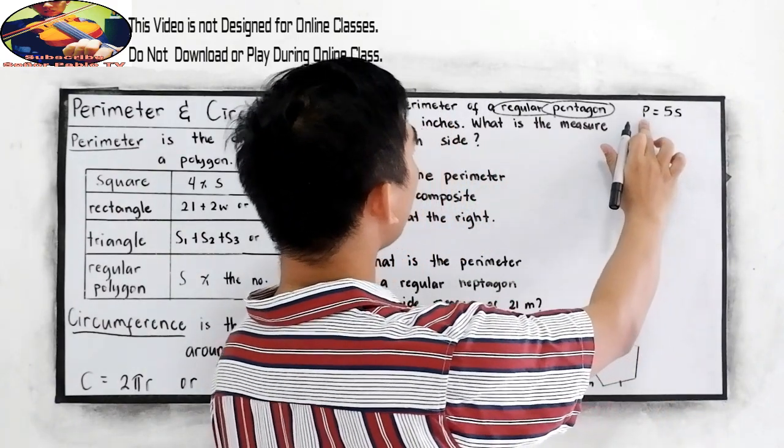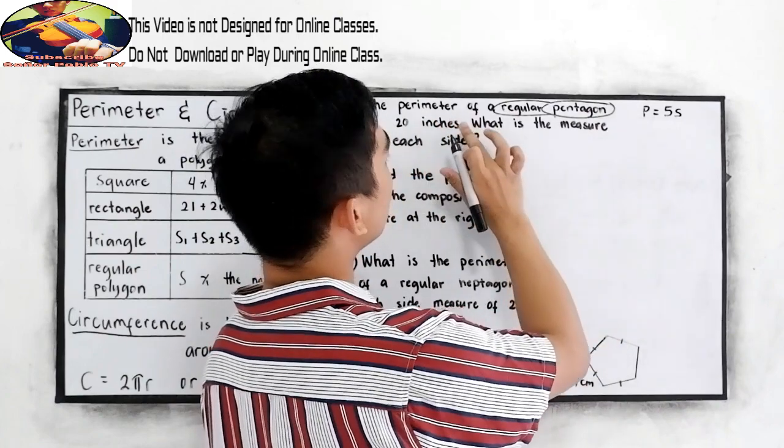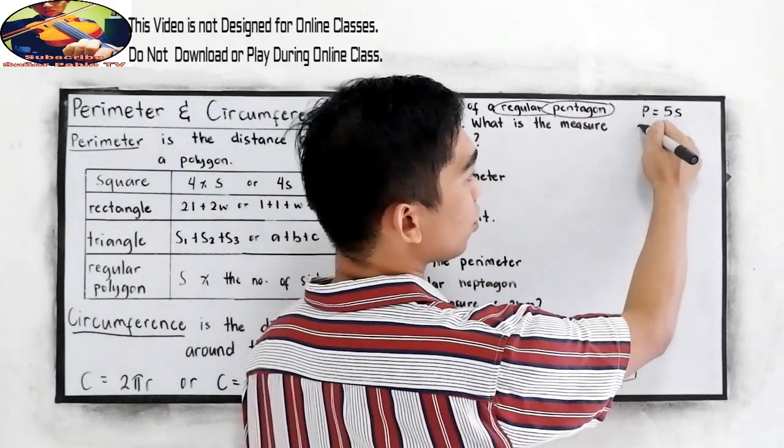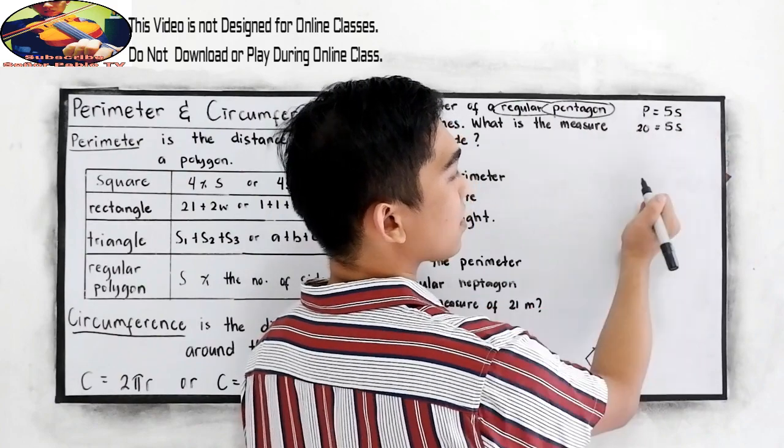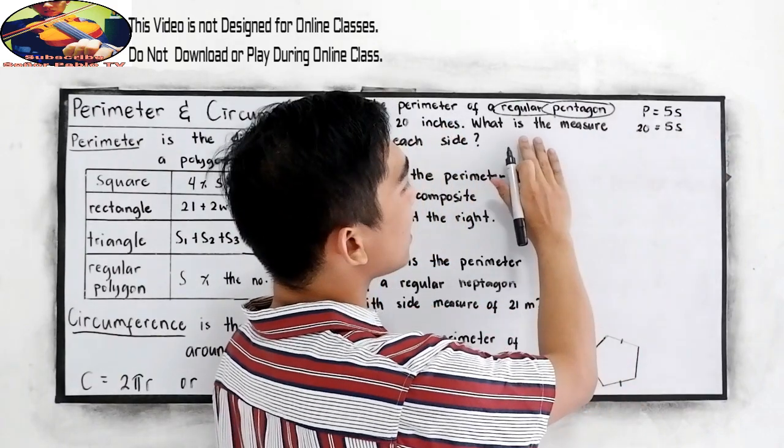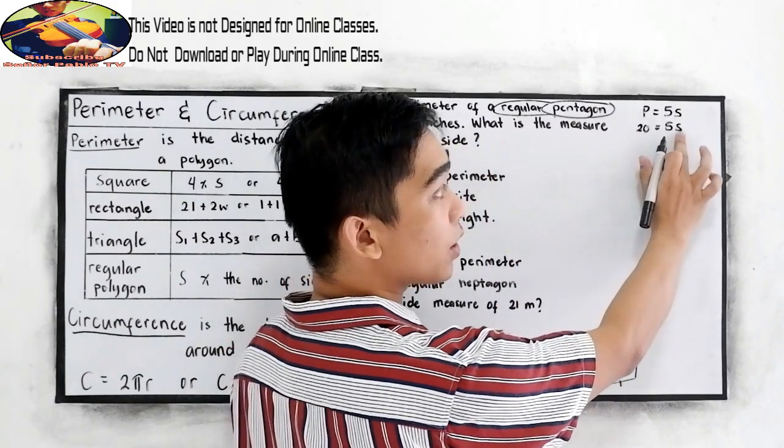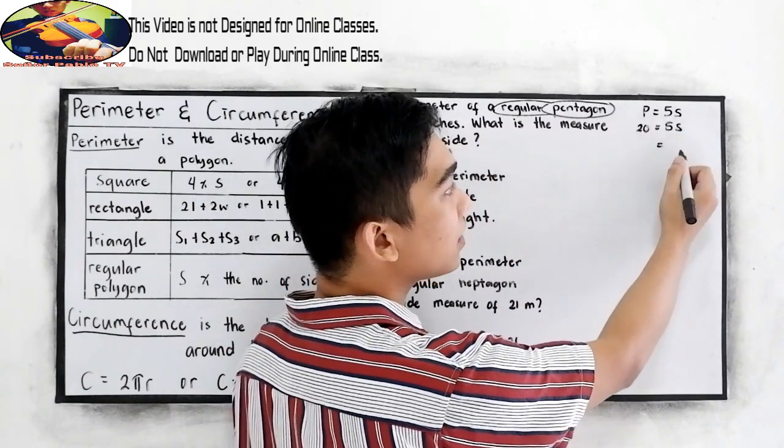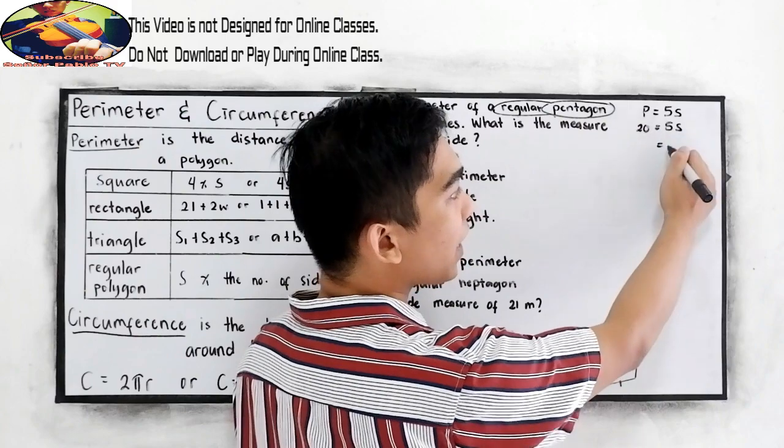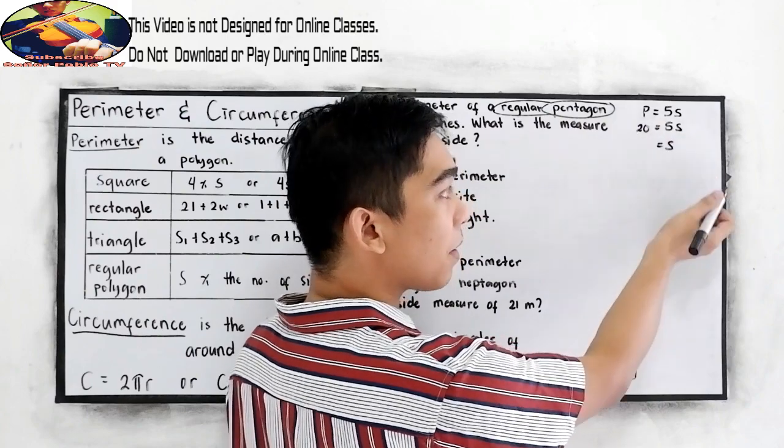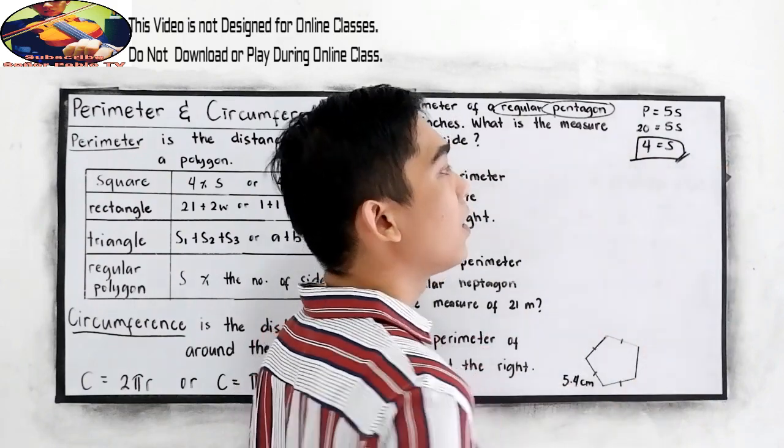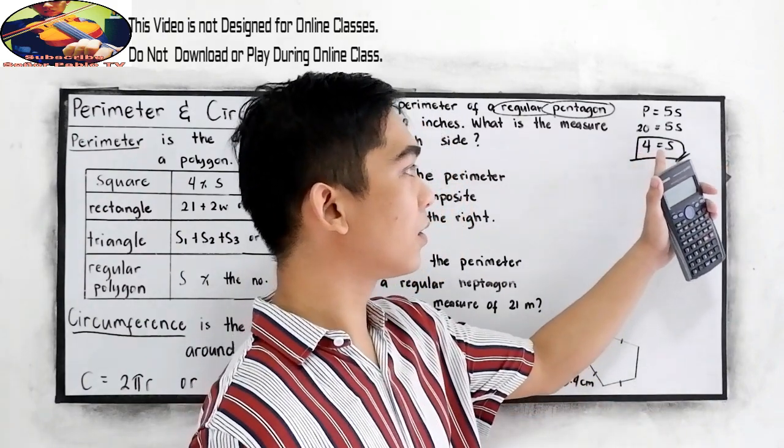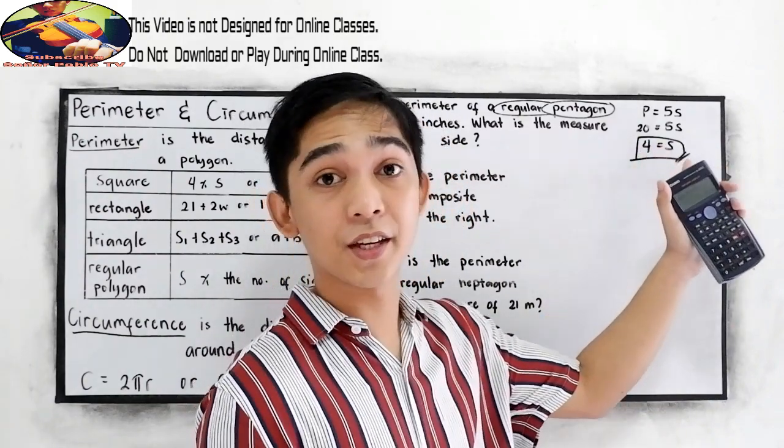Now given is the perimeter, 20. So 20 equals 5s. What is the measure of each side? We're going to find the measurement of the side, so we need to divide by 5. So 20 divided by 5, that will give us 4. So the measure of each side is 4.